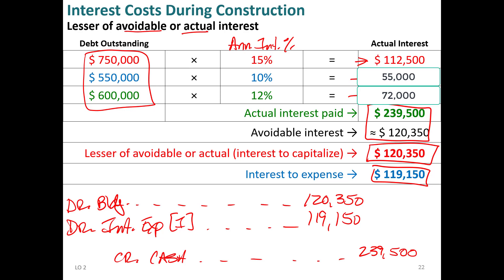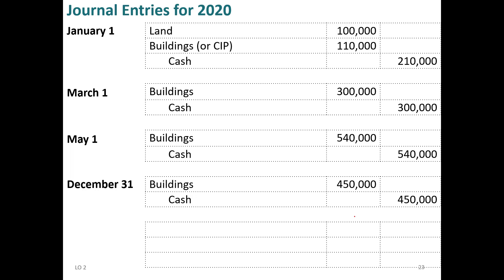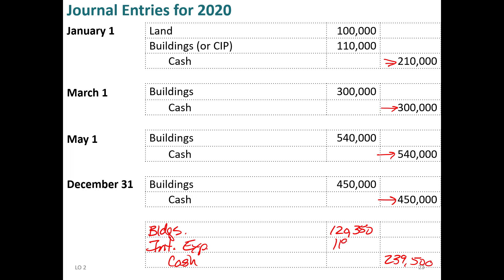Looking at all the journal entries: construction payments of $210,000, $300,000, $540,000, and $450,000 were debited to the building account throughout the year. The interest capitalization entry debits the building approximately $120,230 to avoid expensing that portion. Cash paid for interest totaled $239,500, and the remaining interest expense of approximately $119,272 is expensed.